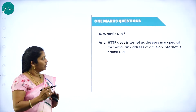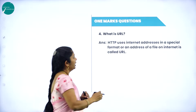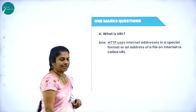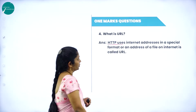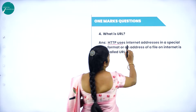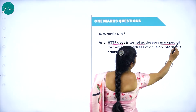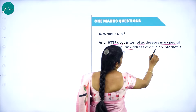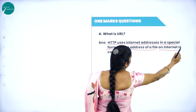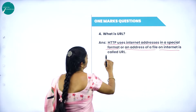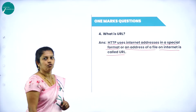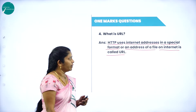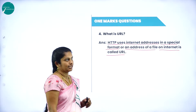What is URL? HTTP — Hypertext Transfer Protocol — uses an internet address in a special format. An address of a file on the internet is called a URL, that is Uniform Resource Locator. HTTP is used for this purpose.